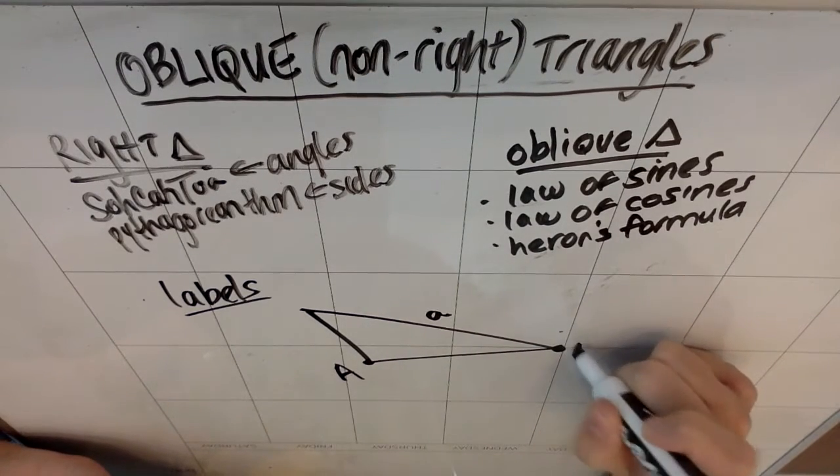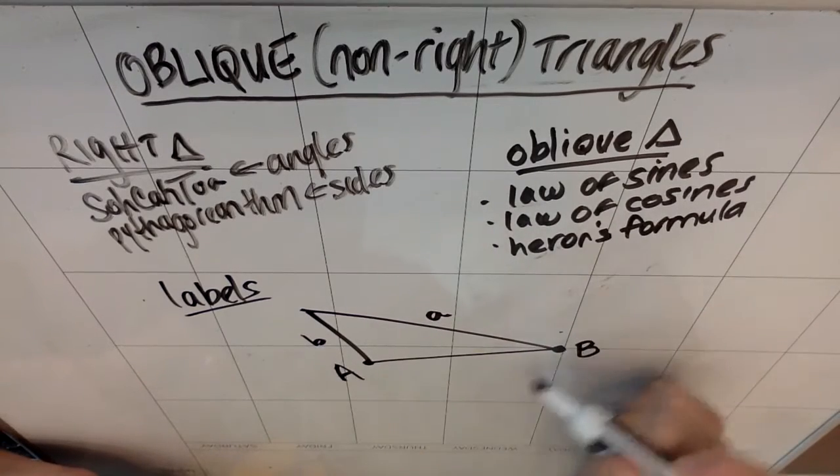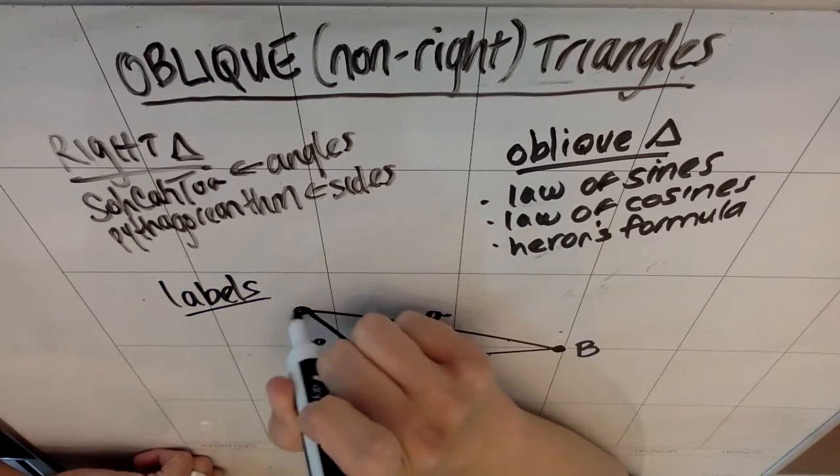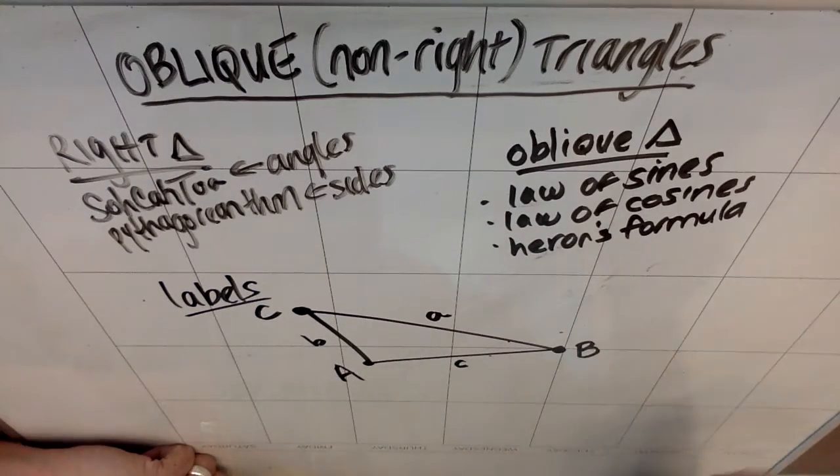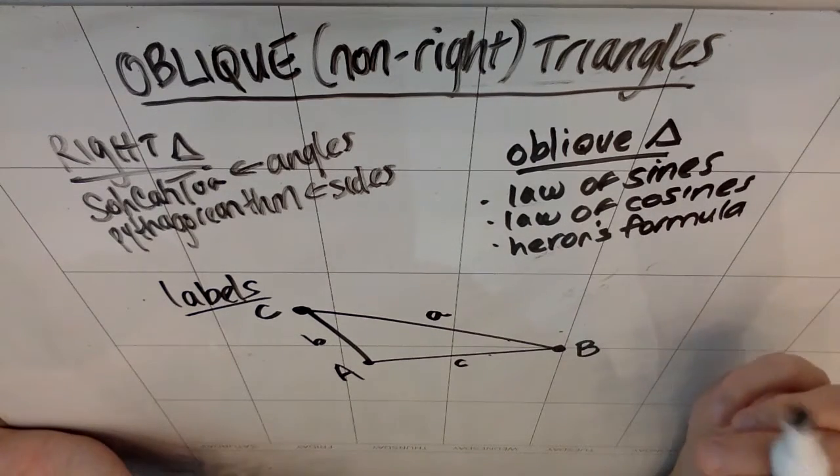If I call this vertex capital B, then the side that's not touching that capital B, the opposite side is going to be a lowercase b. And if I call this vertex c, then the side not touching it is going to be a lowercase c. My lowercase and uppercase c's look about the same, but you get the gist.